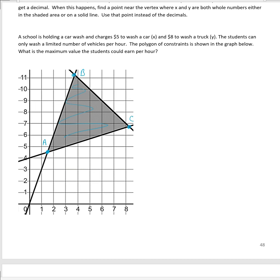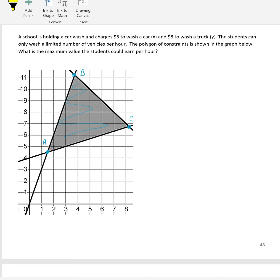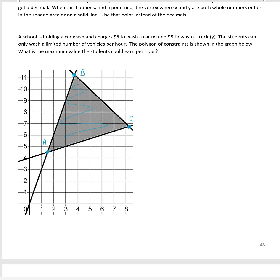Instead of these three corners, we're going to pick new corners that are in our polygon — in the shaded area or on a solid line. Let's take a look at A first. X is somewhere between 1 and 2, Y is somewhere between 4 and 5. We can't move X to 1 because that puts us outside the polygon, so we have to move it to 2. Moving it up a bit as well, our new point A is (2, 5).